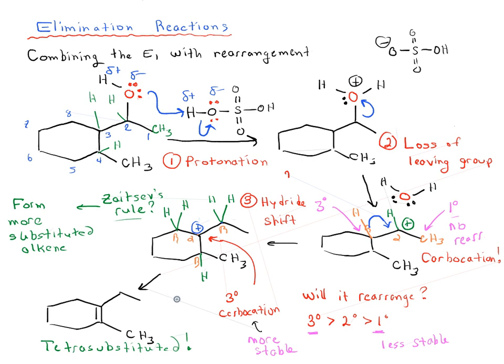That's an example of an E1 reaction that occurs with rearrangement. We protonate the OH, form water, lose water, form a secondary carbocation, have a hydride shift, and then we have a final deprotonation. And that gives us our final alkene.